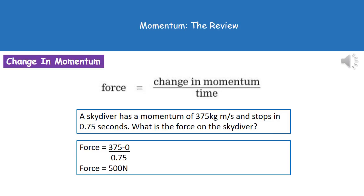To give you an example of the kind of question you might be asked using that then: A skydiver has a momentum of 375 kilogram meters per second, and stops in 0.75 seconds. What is the force on the skydiver? So in order to work it out, first of all, we need the change in momentum. So our skydiver, as we can see in our question, was travelling at 375 kilogram meters per second.